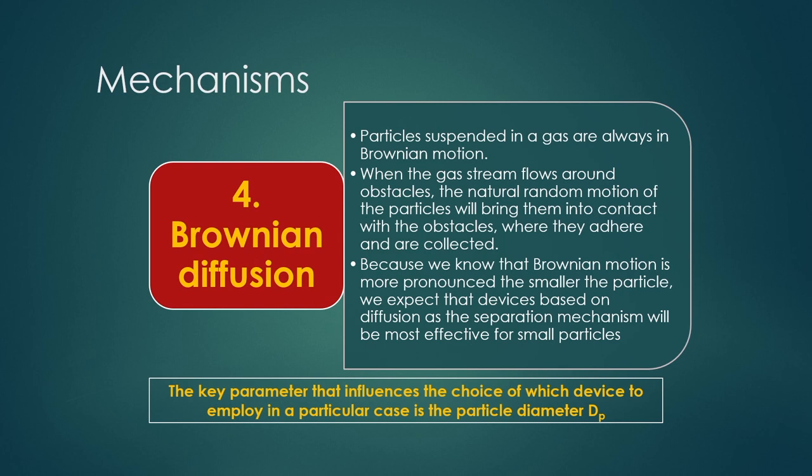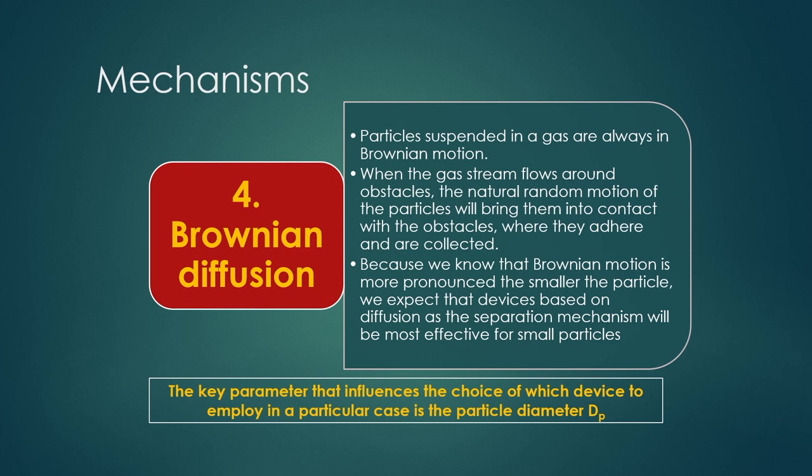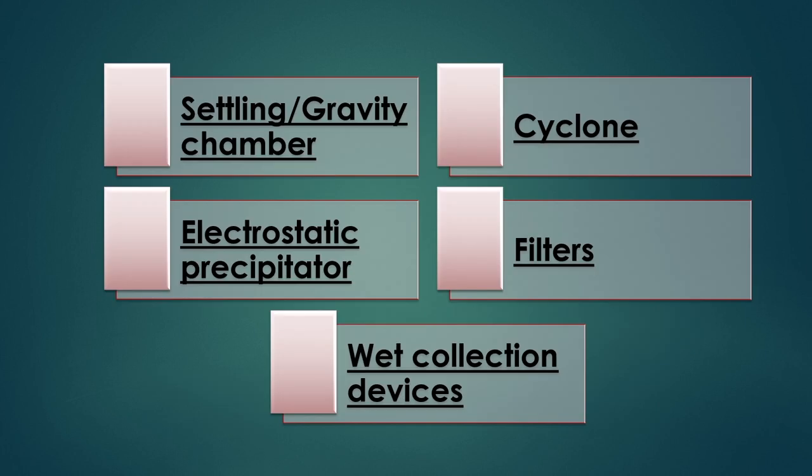The key parameter that influences the choice of which device to employ is the particle diameter DP. DP is one of the important criteria based on which you can select what type of device to use for separation of specific particles. Different types of equipment or devices commonly used in industry for separation of particulate material include: settling or gravity chambers, electrostatic precipitators, cyclone filters, wet scrubbers, and bag filters or leaf filters.